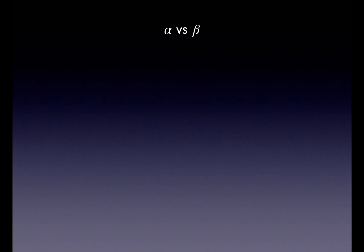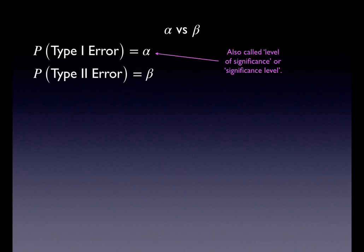Alpha versus beta: the probability of a type one error is alpha; the probability of a type two error is beta. Alpha is also called the significance level or level of significance, and you set your alpha. The industry standard is 5%. If you want to lower the risk of a type one error, you can lower your alpha threshold. If you're not as concerned about a type one error, you can raise your alpha.